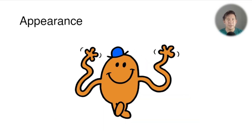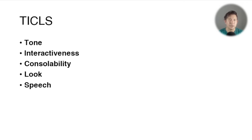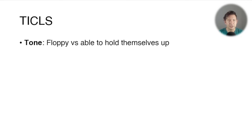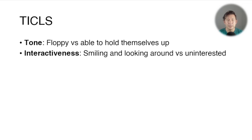For appearance, I want you to remember TICKLES — this is Mr. Tickle from the Mr. Men — and TICKLES is an acronym that stands for tone, interactiveness, consolability, look, and speech. The T is for tone: children from about three to six months old should be able to hold their head up, then their body. If they're unwell they might be really floppy, which is a sign of being unwell.